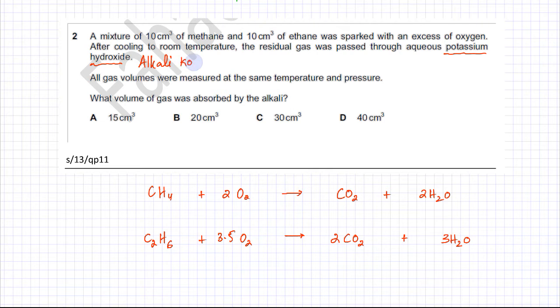This alkali is going to react with or absorb carbon dioxide gas. All gas volumes were measured at the same temperature and pressure. What volume of gas was absorbed by the alkali? We're basically talking about the carbon dioxide gas that is being absorbed because that's the only acidic gas absorbed by the alkali.